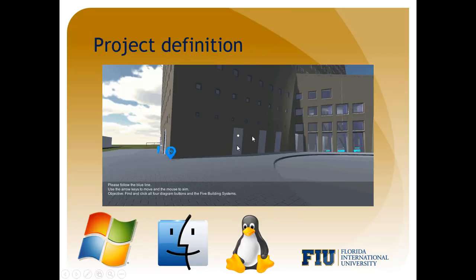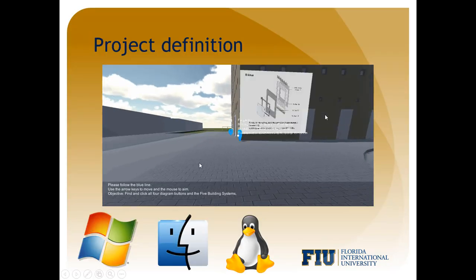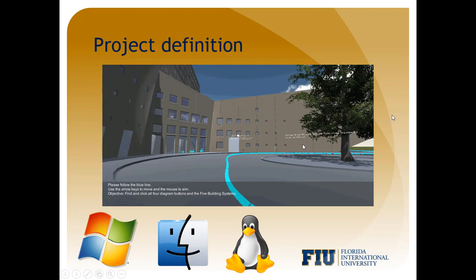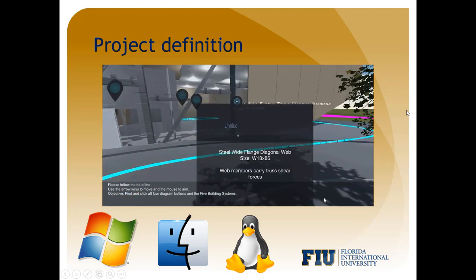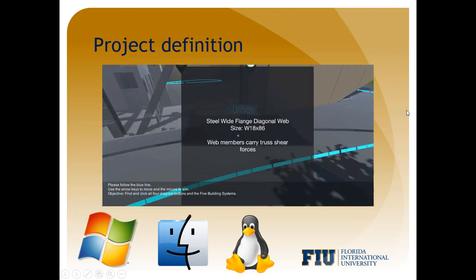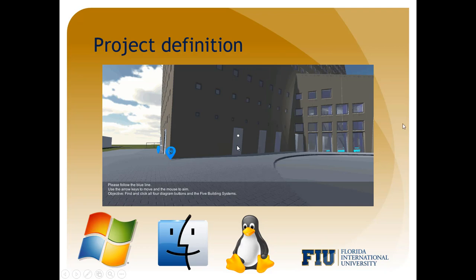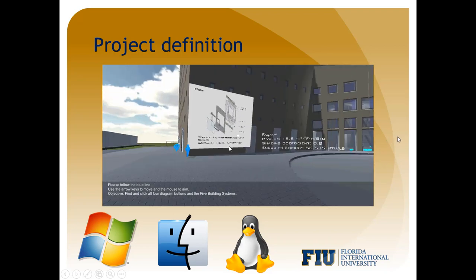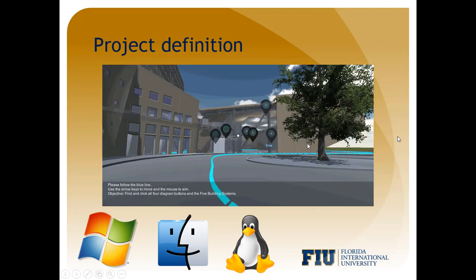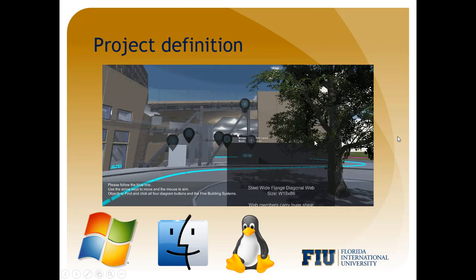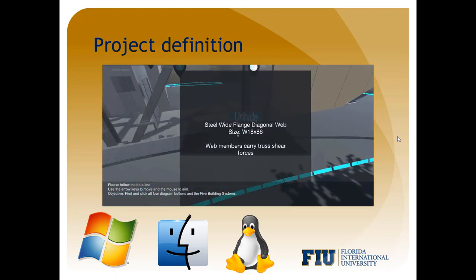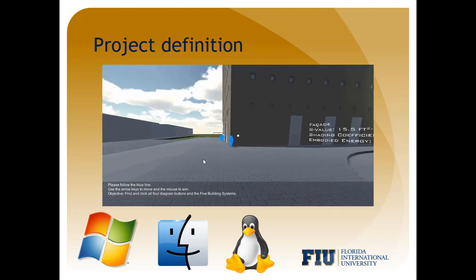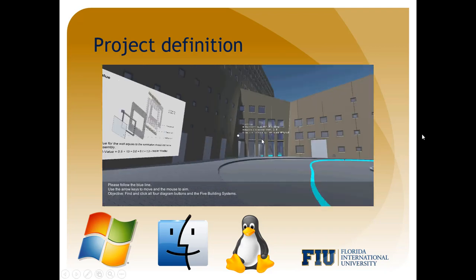Here you can see a short GIF of the system before we began working on it. The application displays a 3D environment of the SIPA building and the area surrounding it. The application is well refined and allows for interaction with a variety of icons and building structures. Users can walk around and click on icons to view building component information, diagrams, and videos.